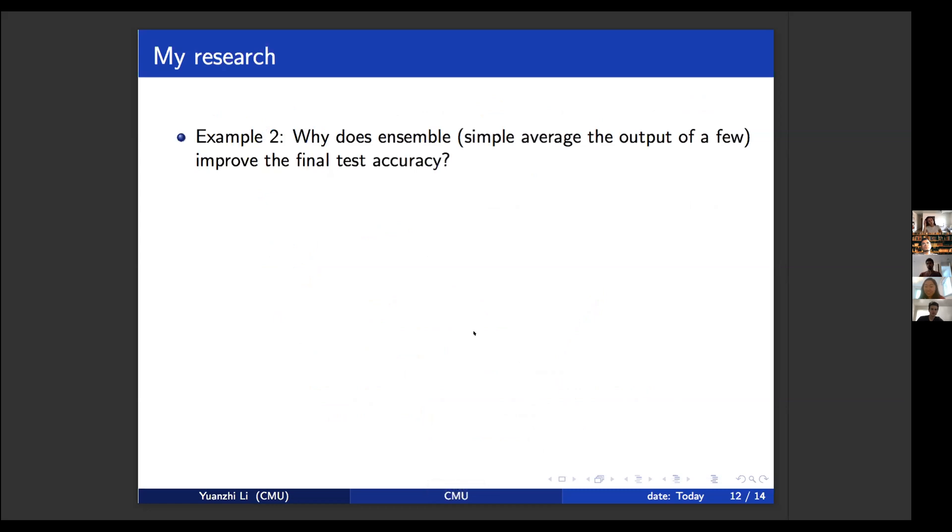And just to give you another example. I mentioned that simple average of the outputs of a few models improves the final test accuracy. So why is that true? I mean, there is a traditional reason saying that each model you trained from random seed using different random seeds, so they should make mistakes at different data. So taking the majority, you probably get the best of all. This is a traditional wisdom saying that the average of those models actually improves test accuracy, but this is actually not true.